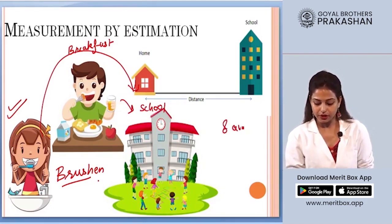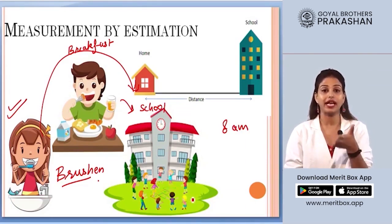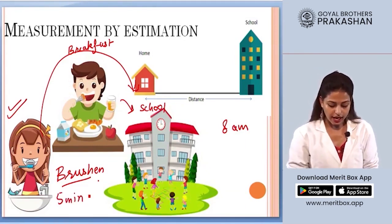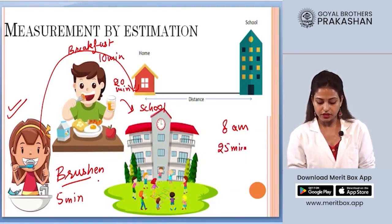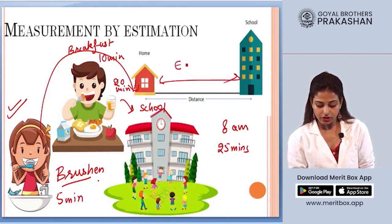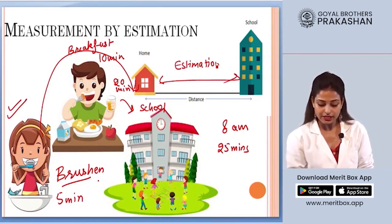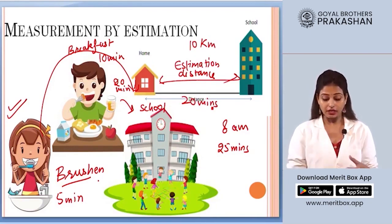When you do all these activities, you calculate how much time you are going to take for each. Let's say your school starts at 8 AM. You have to get up before 8 AM. If brushing takes 5 minutes, breakfast takes 10 minutes, and getting dressed takes 20 minutes, that's approximately 25 minutes total. Your school is also at some distance from your house — say 10 kilometers, taking around 20 minutes to reach.